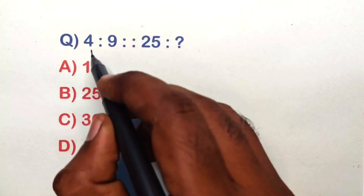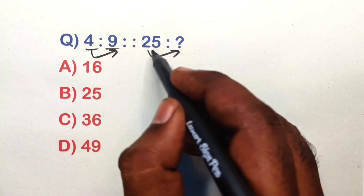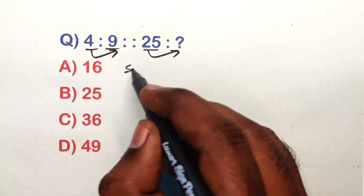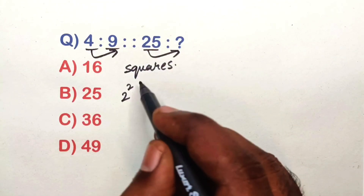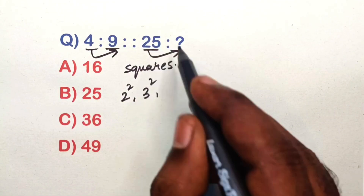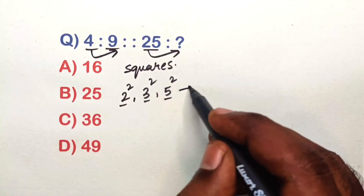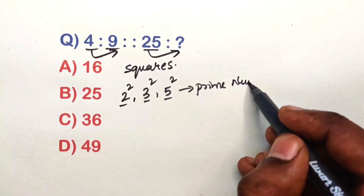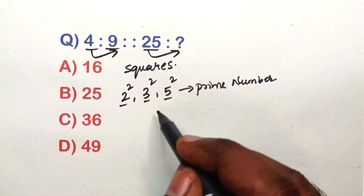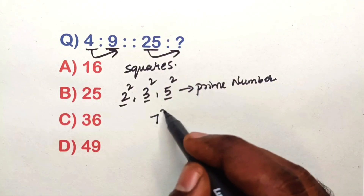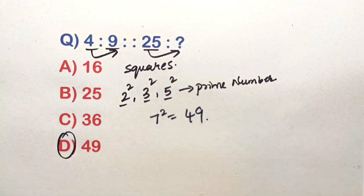Find the relation in this analogy question. The numbers 4, 9, and 25 are square numbers — specifically 2 squared, 3 squared, and 5 squared, where 2, 3, 5 are prime numbers. The next prime after 5 is 7, so 7 squared is 49. Option D is the correct answer.